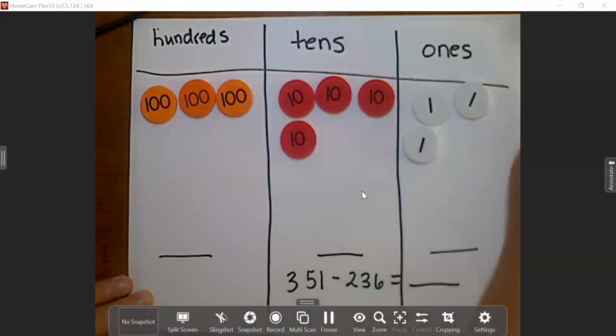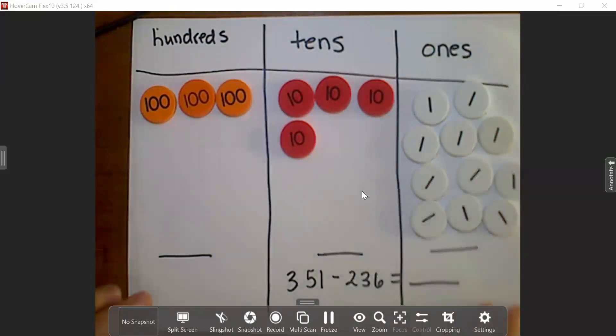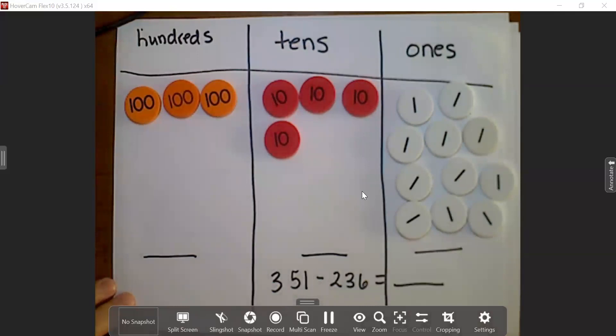1, 2, 3, 4, 5, 6, 7, 8, 9, 10. So now let's count how many ones we have. 1, 2, 3, 4, 5, 6, 7, 8, 9, 10, 11.